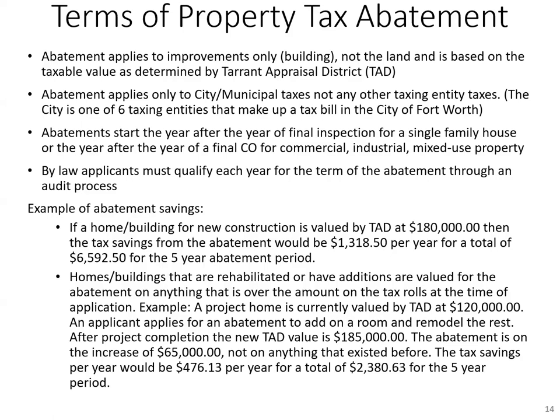The reason abatements start the following year is because Tarrant Appraisal District determines the value of a project on January 1, even though your bill does not come due until December. So if you are building a home and on January 1 you're still in the process of building and it's not complete, your abatement would only be on the portion that was complete. We wait until the project is complete and do your abatement the year after to make sure that on January 1 all improvements are accounted for and you're getting the full benefit of your tax abatement. Applicants must qualify each year for the term of the abatement through an audit process, and this is by law. Those audit records are permanent retention — we can never destroy them — so the state can ask to see our audit records of tax abatements at any time.